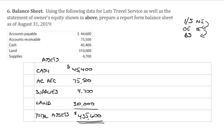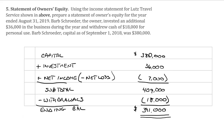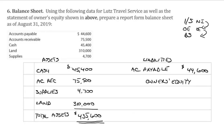Now we've got to see if our assets equal our liabilities plus equity. We'll do liabilities first. We only have one — accounts payable for $44,600. The dollar sign goes here because it's the beginning of a new column. And then we've got owner's equity. Our owner's equity was $391,000, so that's going to go into the capital account — $391,000. And that's going to equal $435,600.